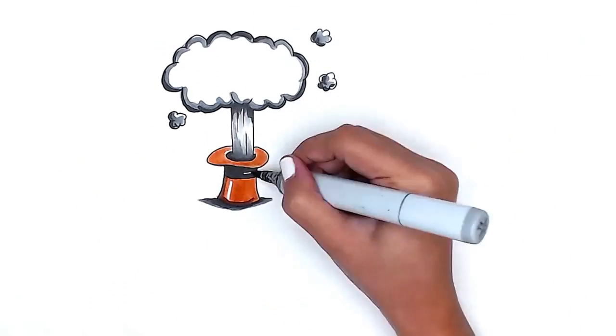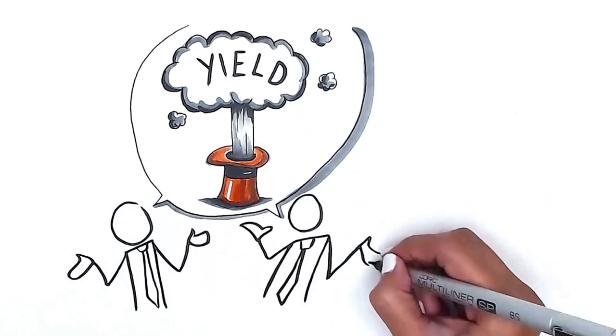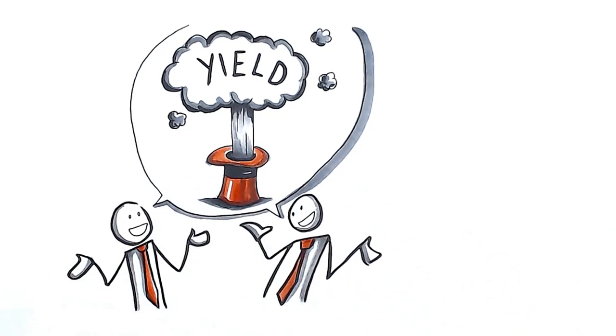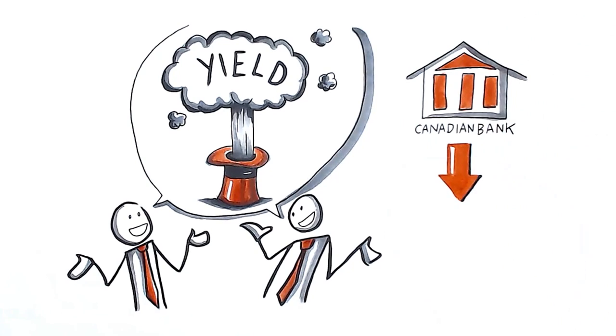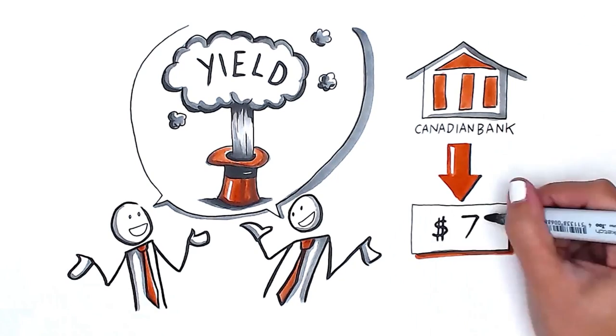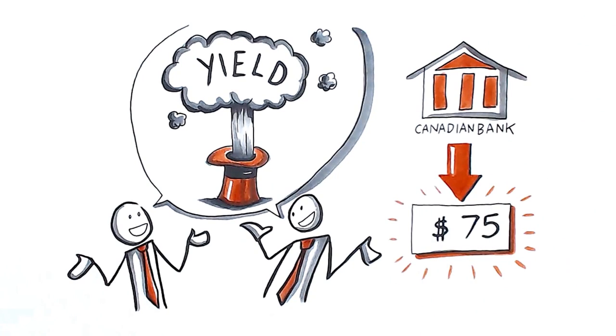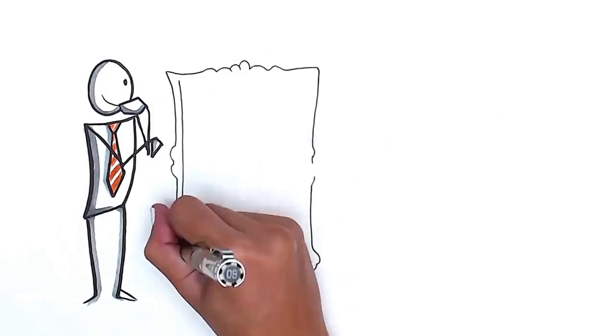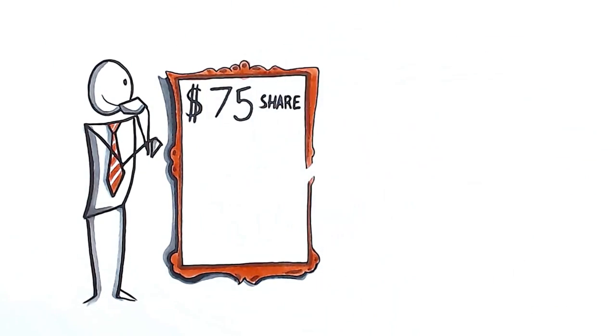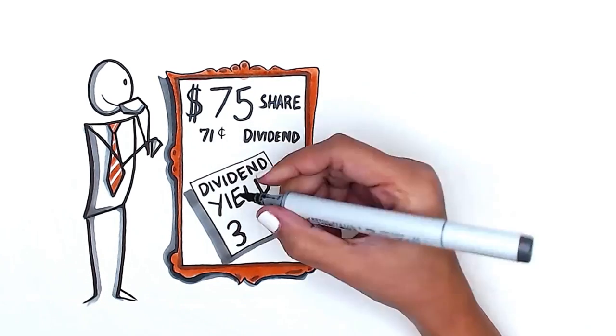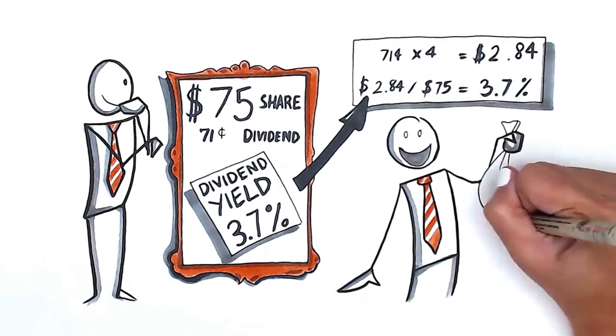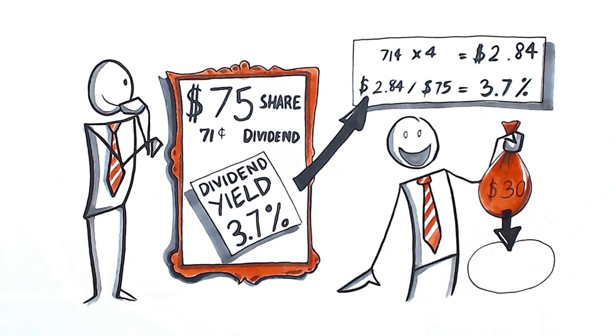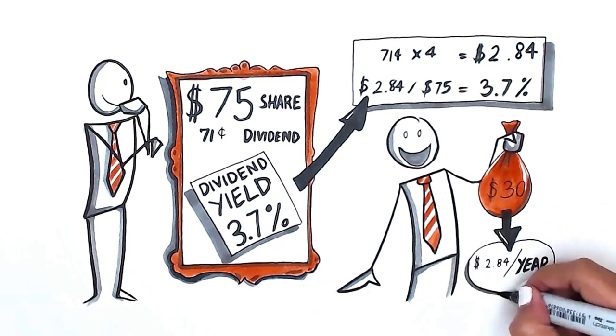The magic of yield on cost is lost in all the statements and conversations about investing. One reason why we forget is because this bank's share price is now trading at about $75. When we see our investment statements showing a $75 share price and $0.71 dividend, we see a dividend yield of only 3.7%. And we forget that we only paid $30 for that $2.84 of annual income.